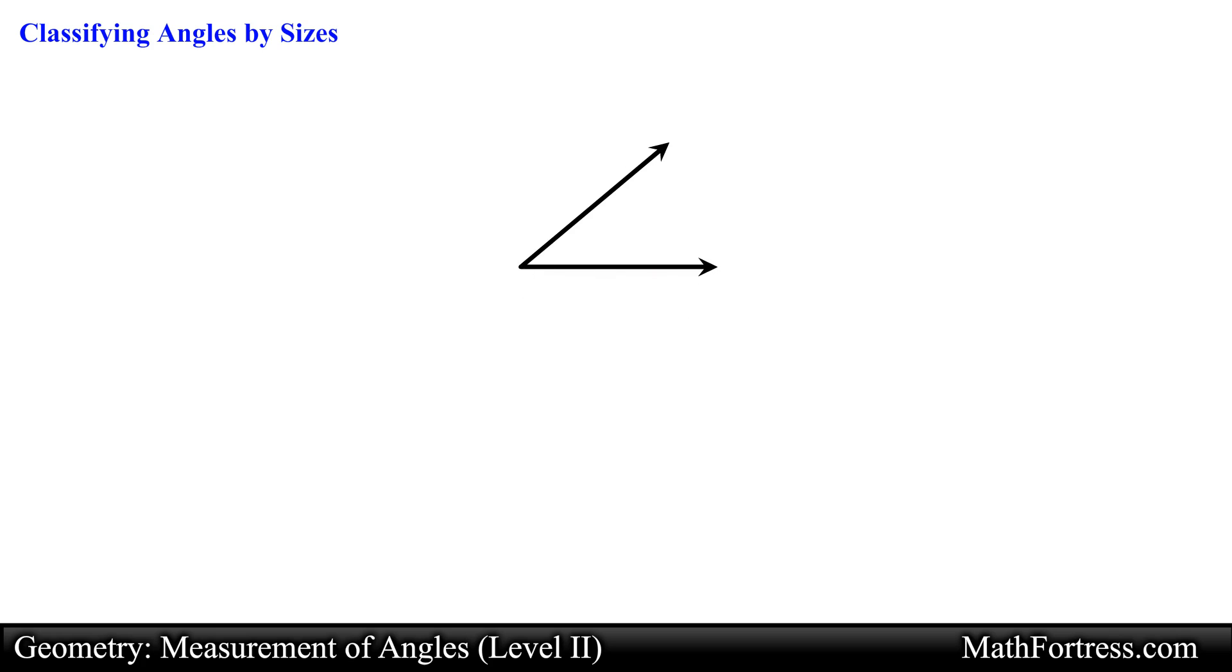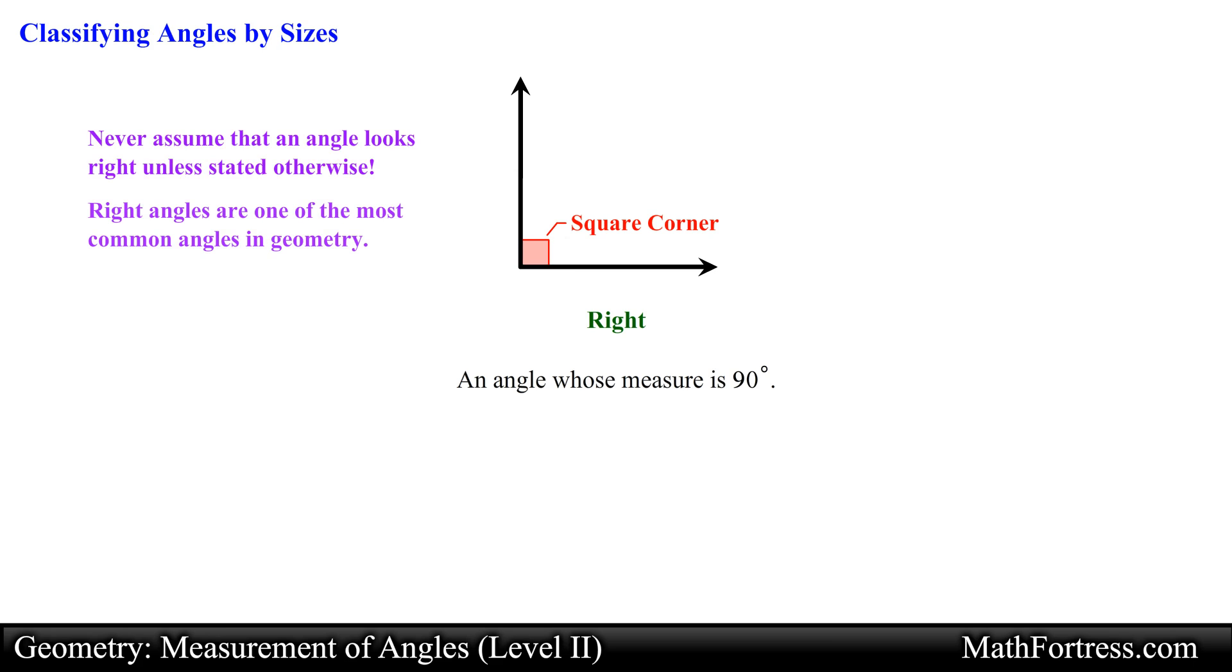Let's take a look at the next angle. A right angle is an angle whose measure is 90 degrees. The angle shown can be classified as a right angle. Notice that a right angle is indicated by the square corner placed in the angle. This symbol will be used throughout this course to label right angles. So never assume that an angle is right unless stated otherwise. Right angles are one of the most common angles in geometry. This is why it has its own symbol.